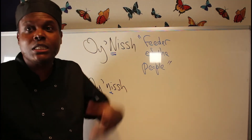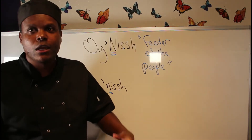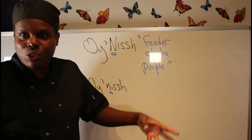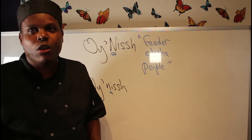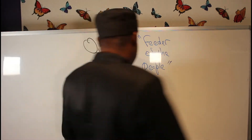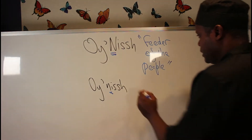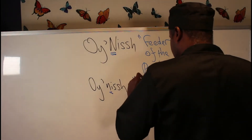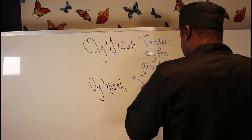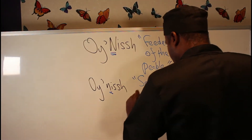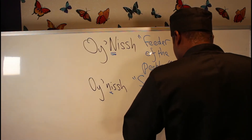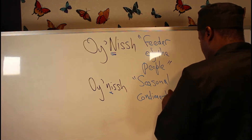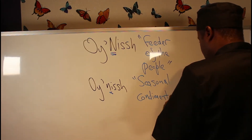And this is where the food comes in now. This is how Oynish the food starts - because with a common N it goes into the world of food and food preparation. So with a common N, it's a seasonal condiment - oil, etc.